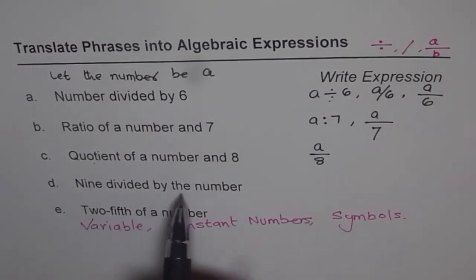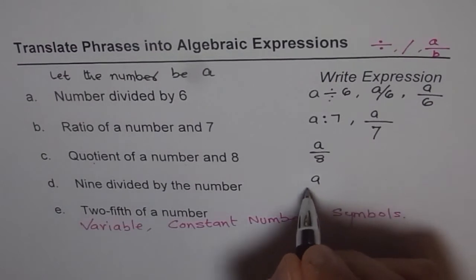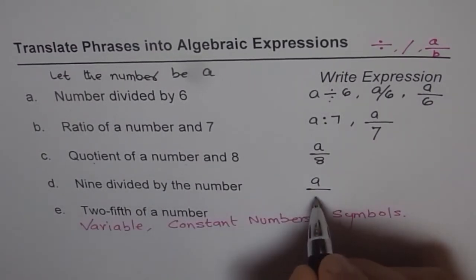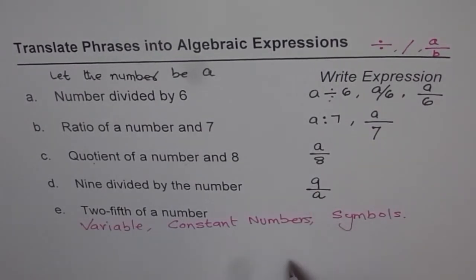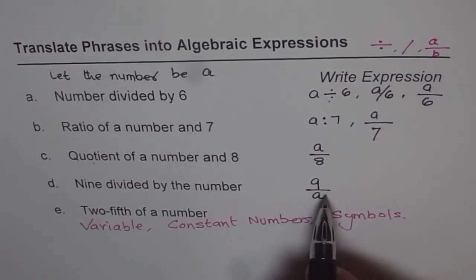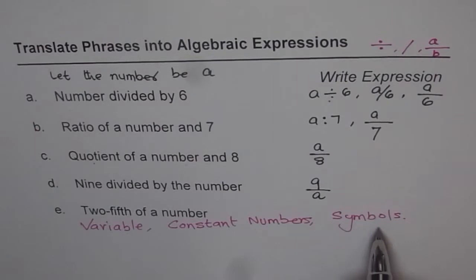9 divided by a number. That means 9 is now divided by the number a. So this is 9 for me, 9 divided by a. So this symbol is a symbol for division. So we have these three symbols for division.